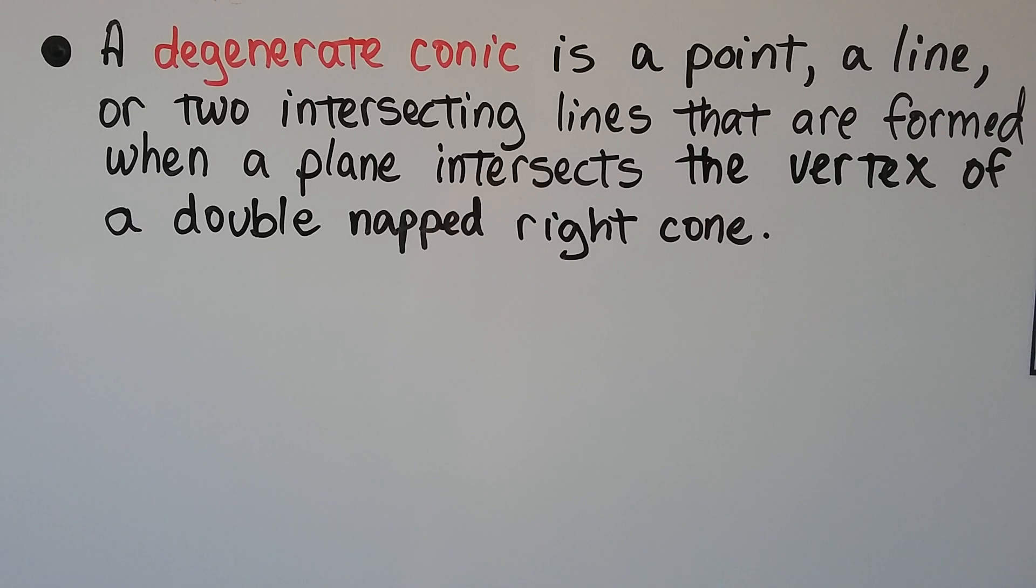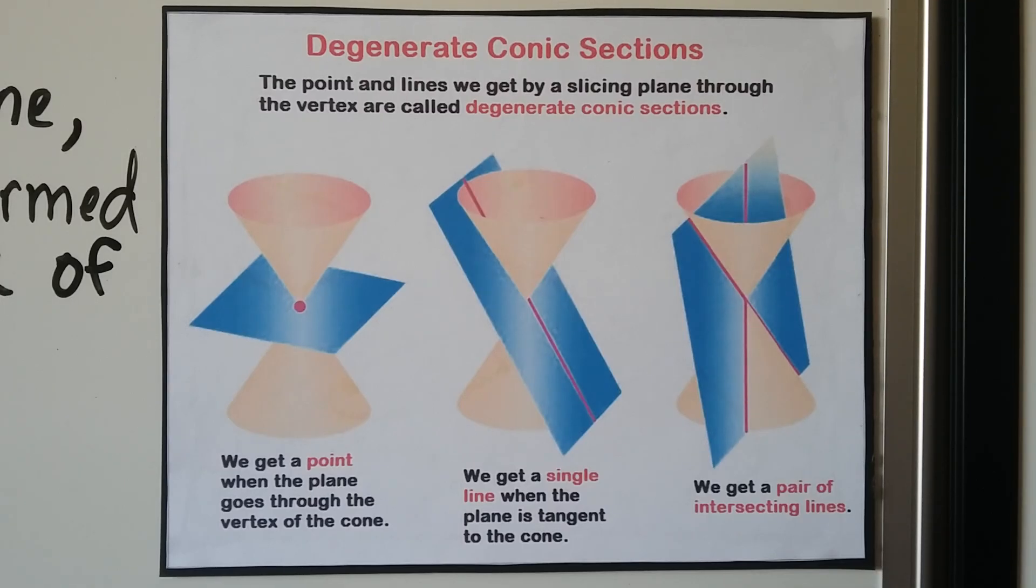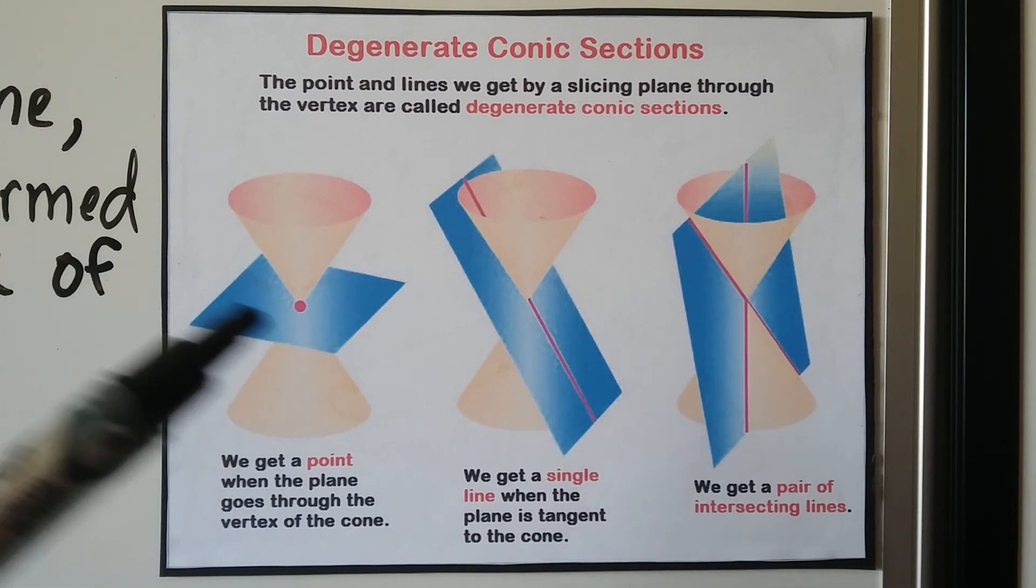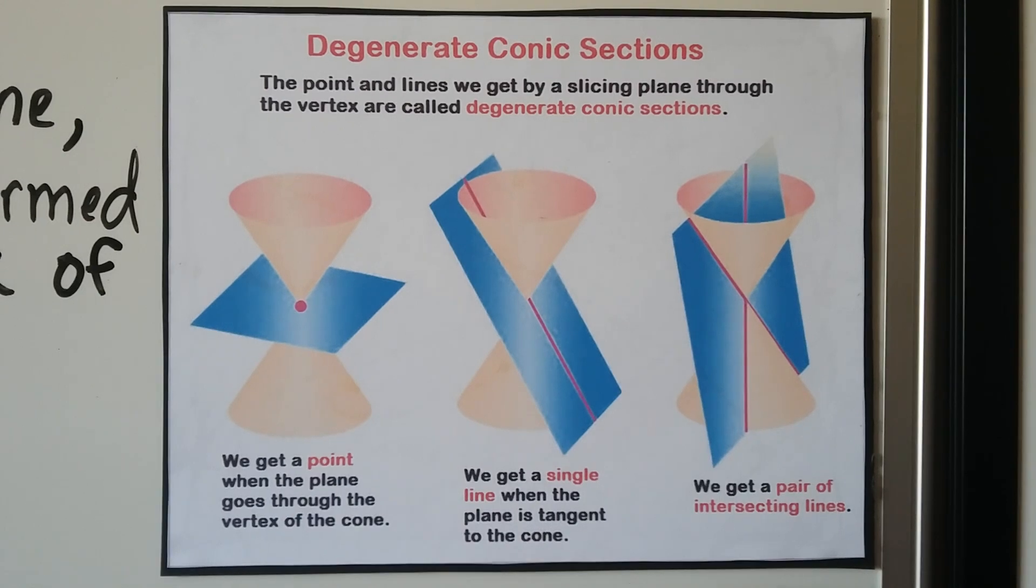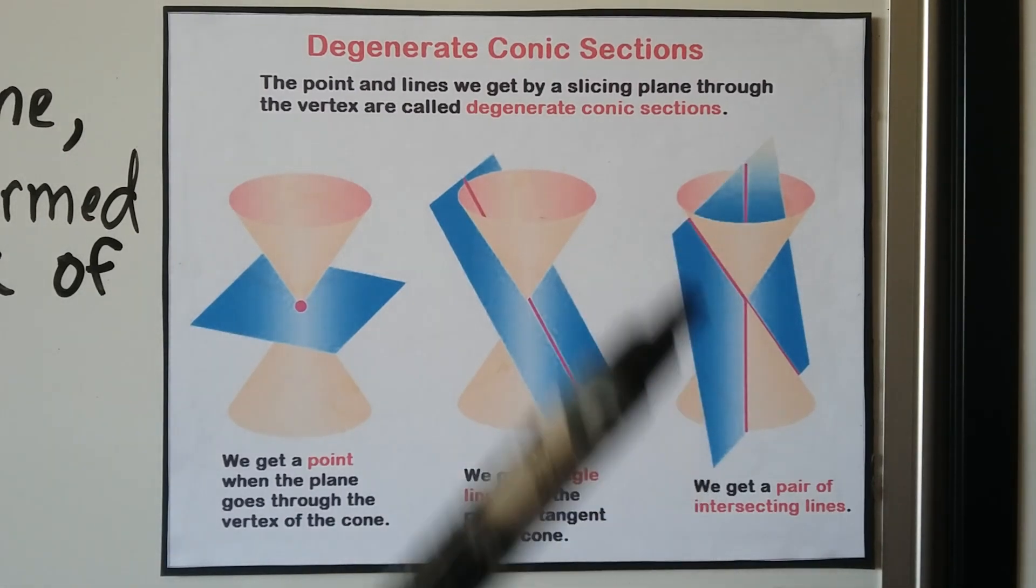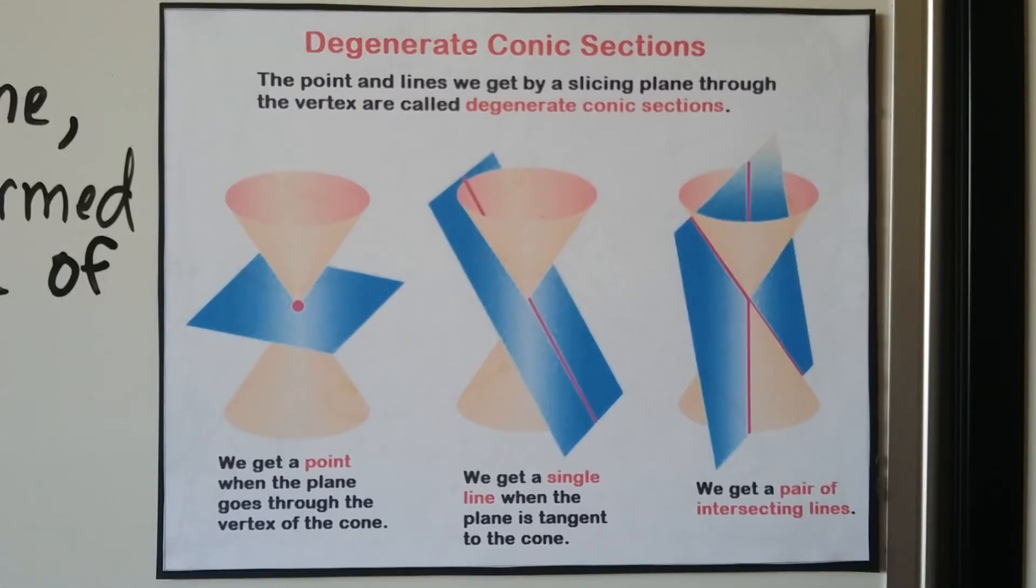A degenerate conic is a point, a line, or two intersecting lines that are formed when a plane intersects the vertex of a double-napped right cone. So here are some degenerate conic sections. The point and lines we get by slicing a plane through the vertex are called degenerate conic sections. So we'll get a point when the plane goes through the vertex of the cone. We'll get a single line when the plane is tangent to the cone. And here we'll get a pair of intersecting lines, the two lines intersecting.